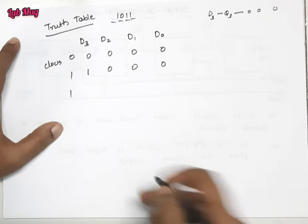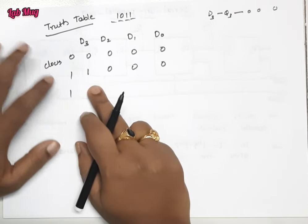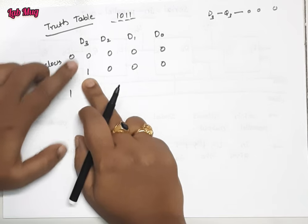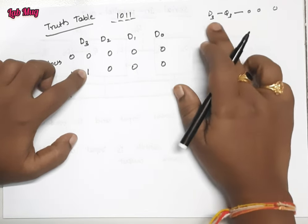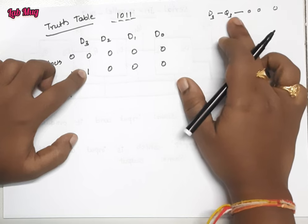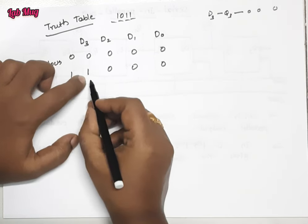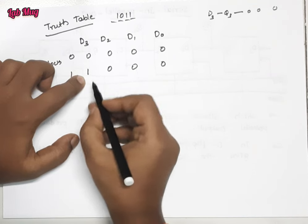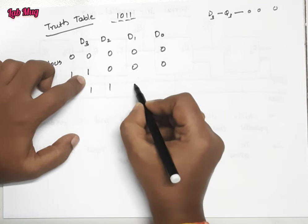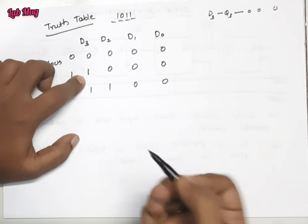Whenever clock value is again 1, then this one is going to D2. This D3 is going to output Q3, Q3 is going to D2. So again this one is moving from right side, that is 1 1 0 0.